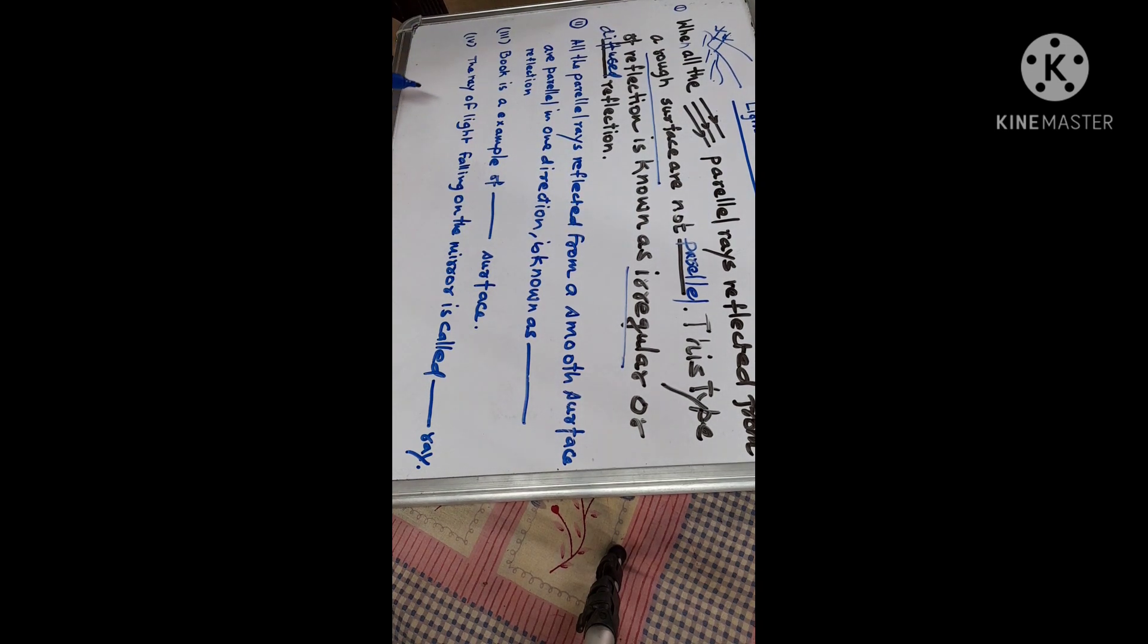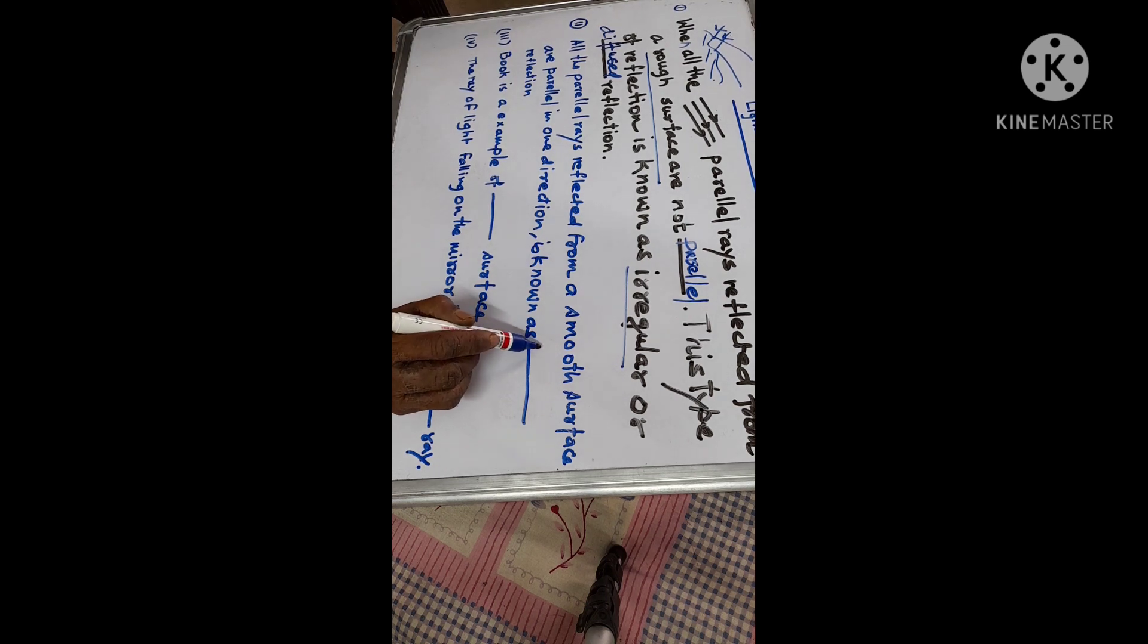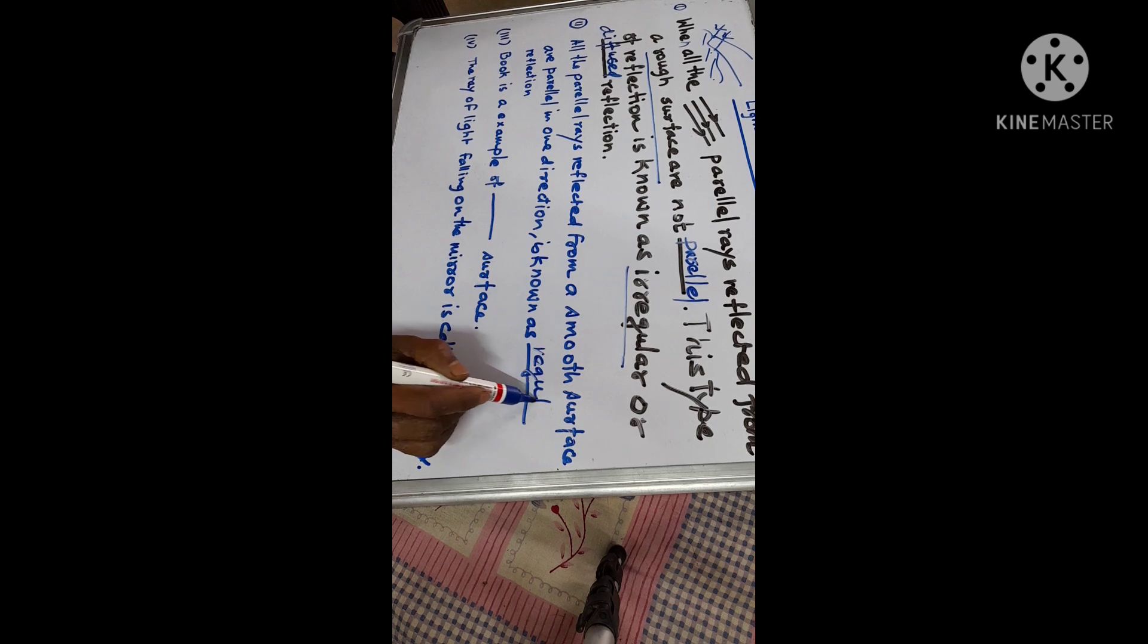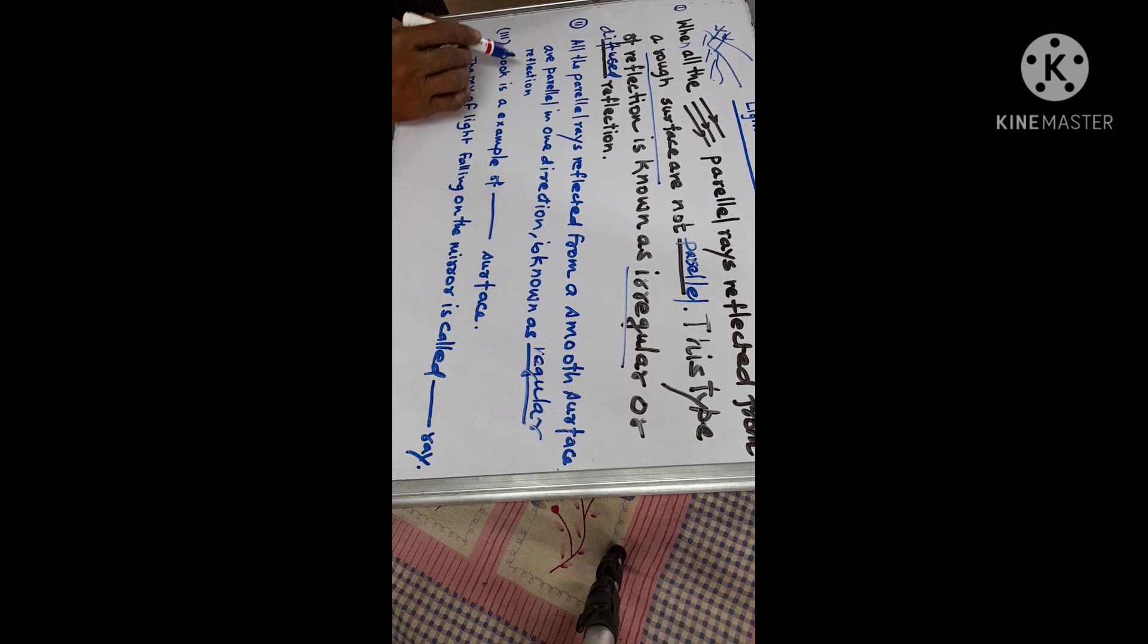Next, second, all the parallel rays reflected from a smooth surface are parallel in one direction. This is known as regular reflection. So it is called regular reflection.